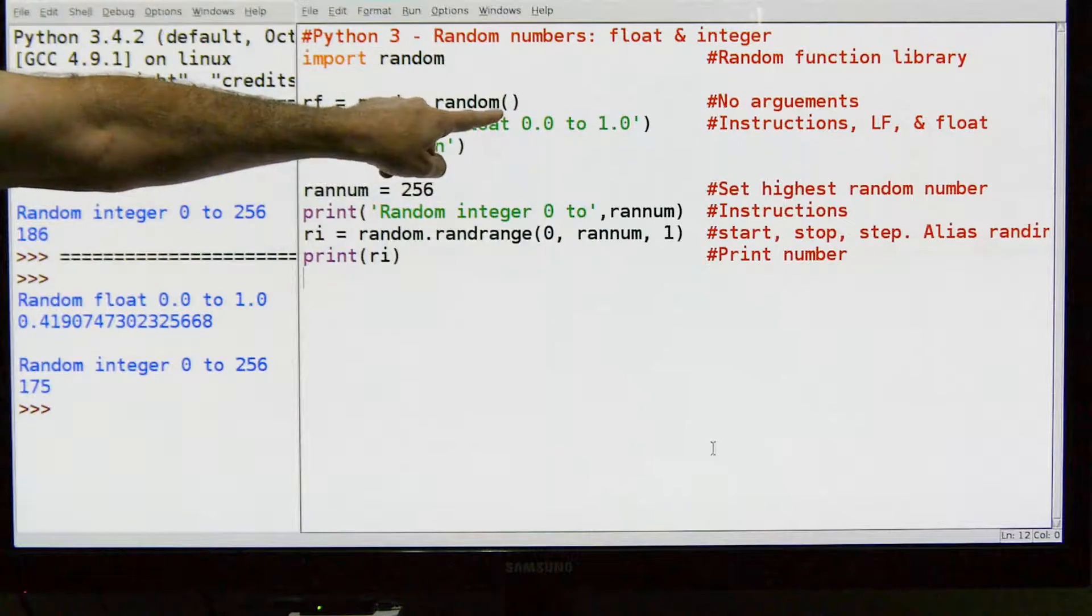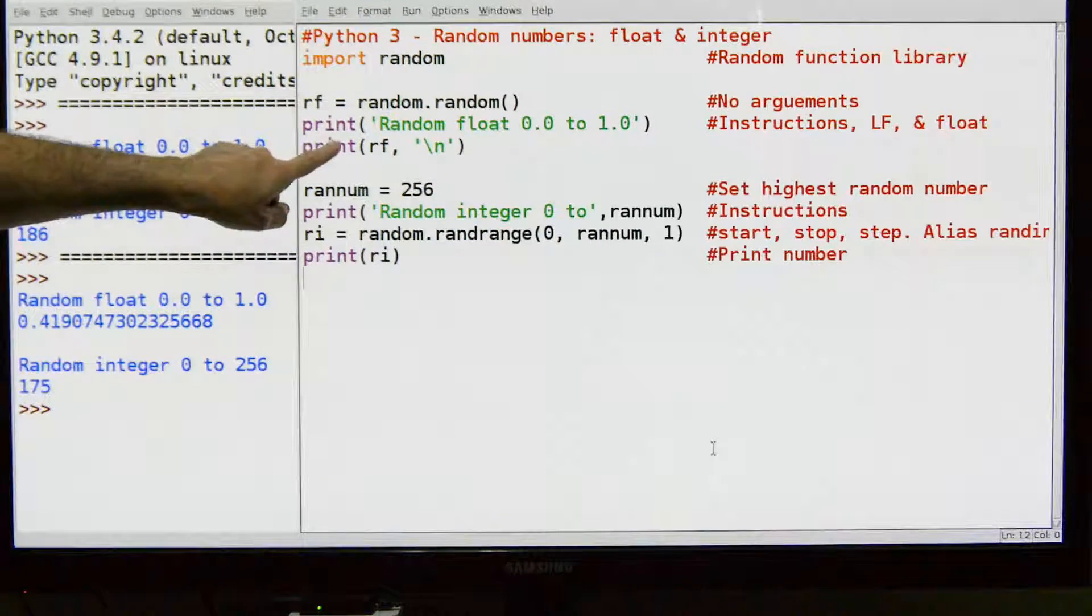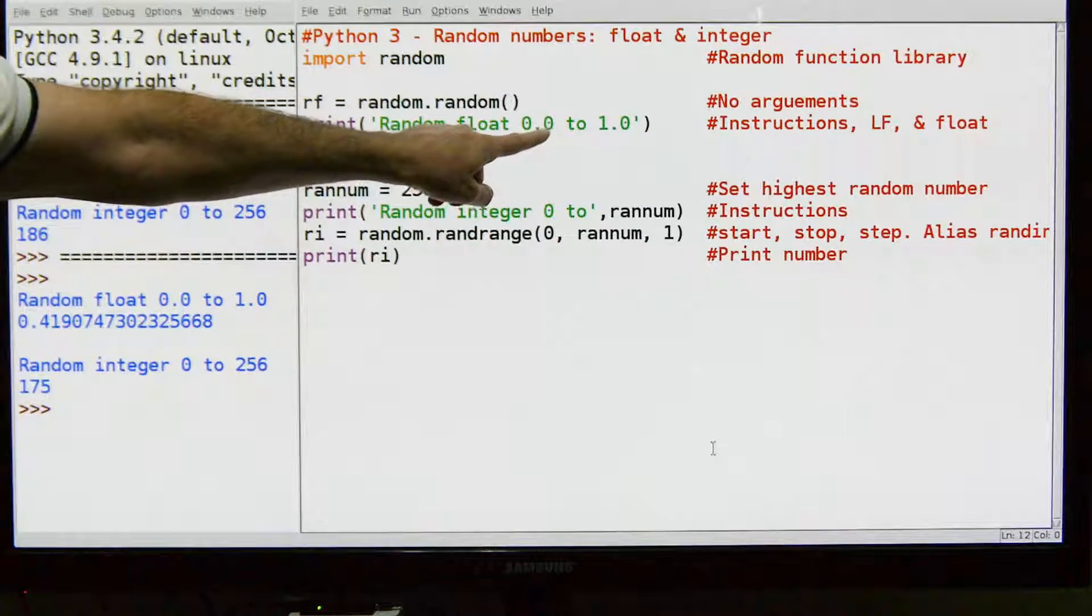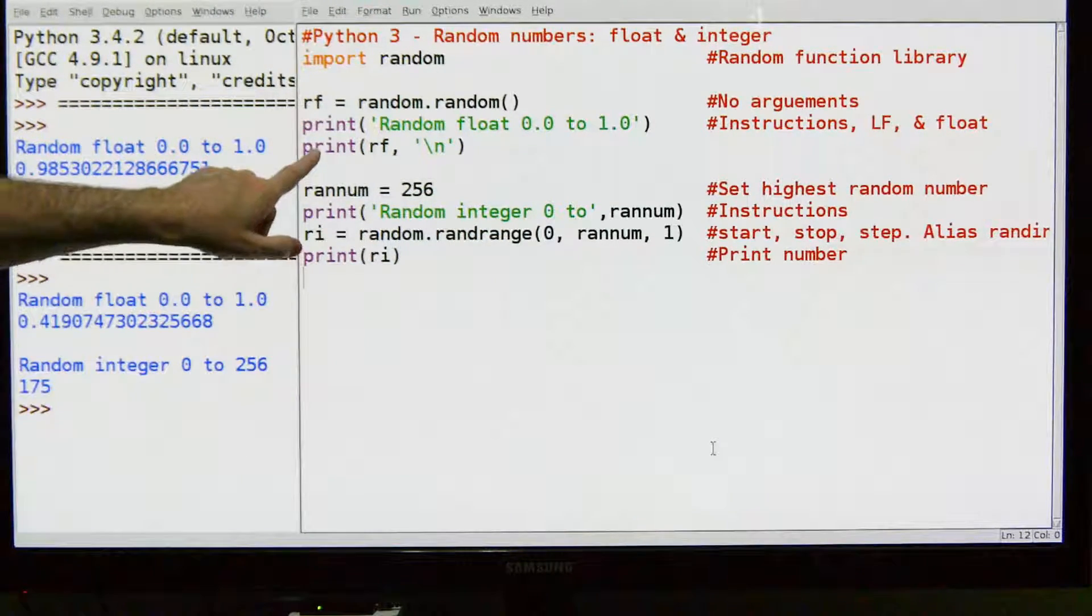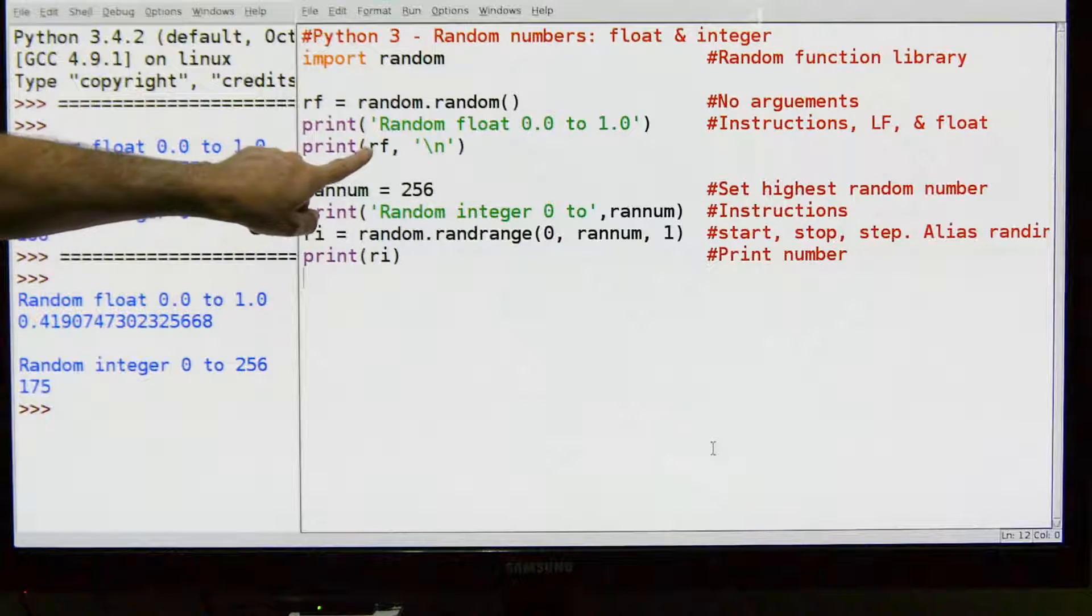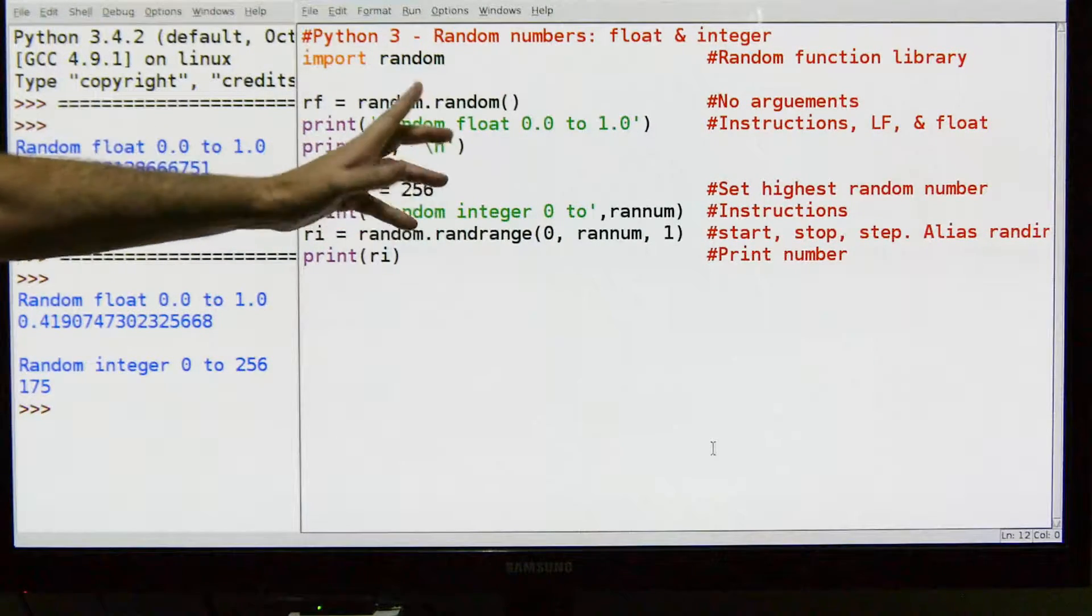All you do is call random.random() with no arguments, and then we're going to print this random float from 0.0 to 1.0 because that's what it returns with floats. And the next thing is we're going to print the random float and then a new line feed.